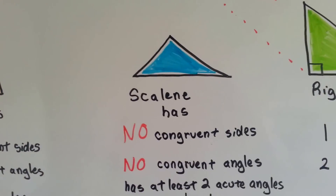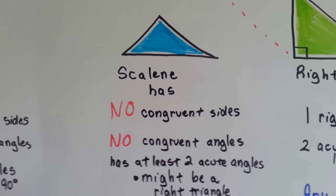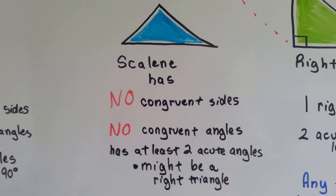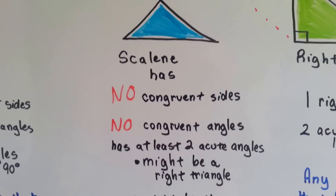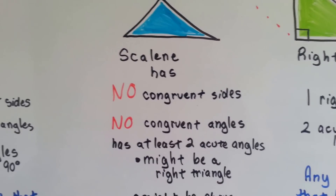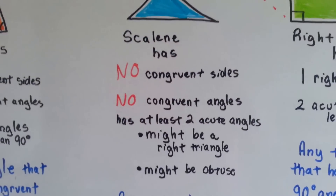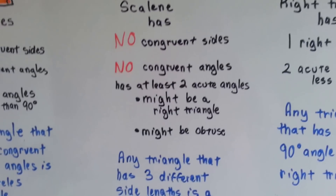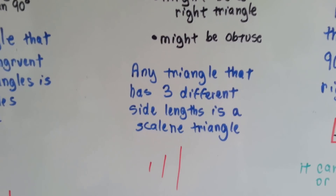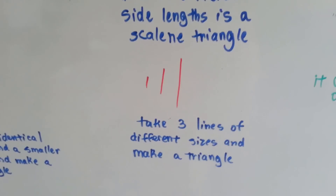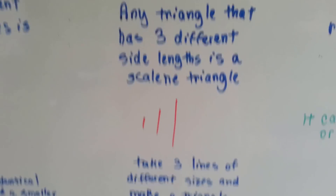A scalene triangle has no congruent sides and no congruent angles — they're all three different from each other. But they do have at least two acute angles, two smaller-than-90-degree angles. It might be a right triangle — note the word might — it might not be, or it might be obtuse. Any triangle that has three different side lengths is a scalene triangle. If you took three lines of different sizes and made a triangle out of it, it would be a scalene.